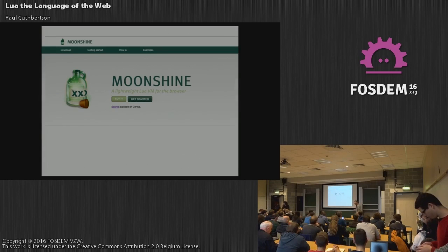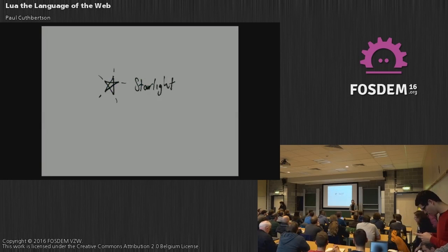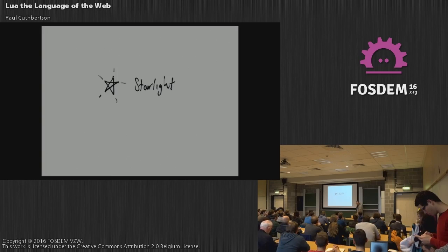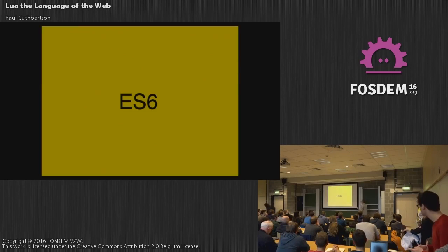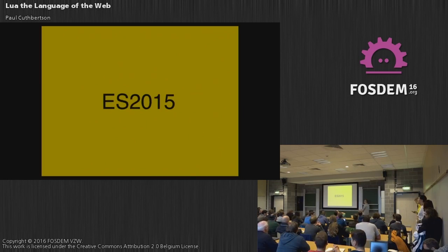So today I'm going to talk about my new project which is Starlight, which is a translator from Lua code to JavaScript — or more specifically ES6, or ES2015 as it's called now.